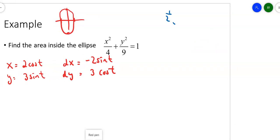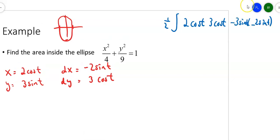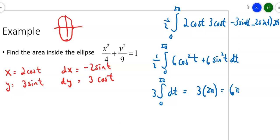I should take one-half the integral of X dy minus Y dx. So 2 cosine T, 3 cosine T minus 3 sine T times negative 2 sine T dt from 0 to 2π. Let's clean this up. Integral from 0 to 2π, 2 cosine 3 cosine gives me 6 cosine squared T, positive 6 sine squared T dt. Pull the 6 on the outside. Half the 6 is 3. Cosine squared plus sine squared is just 1. Now you're left with 3 times 2π, which is 6π.